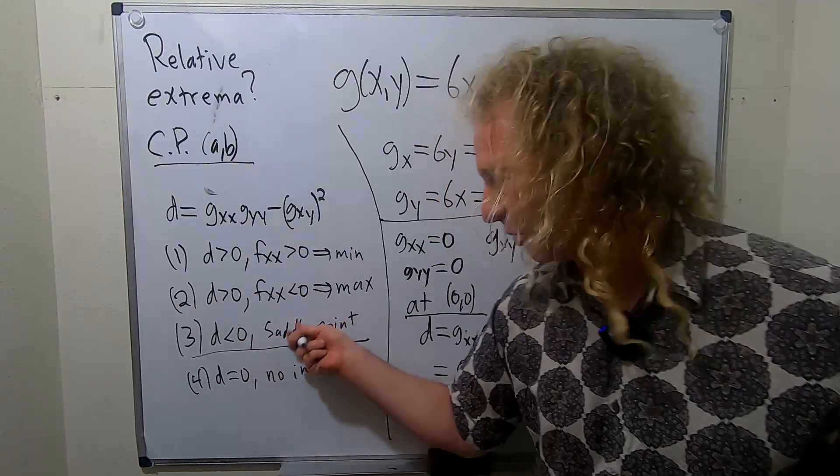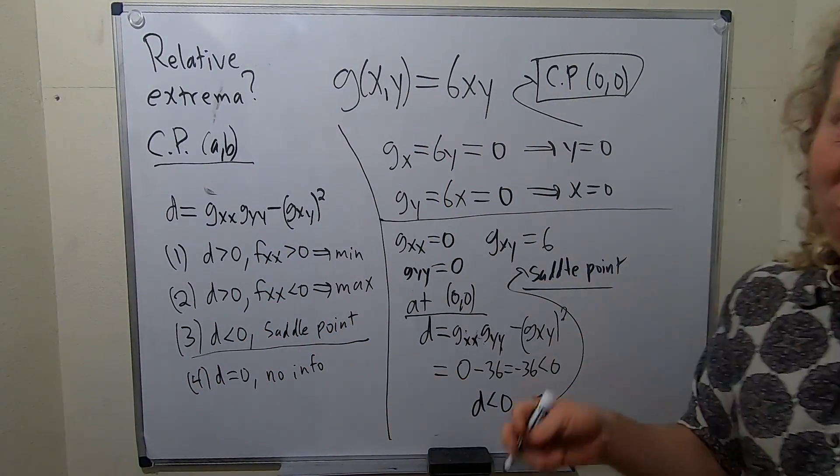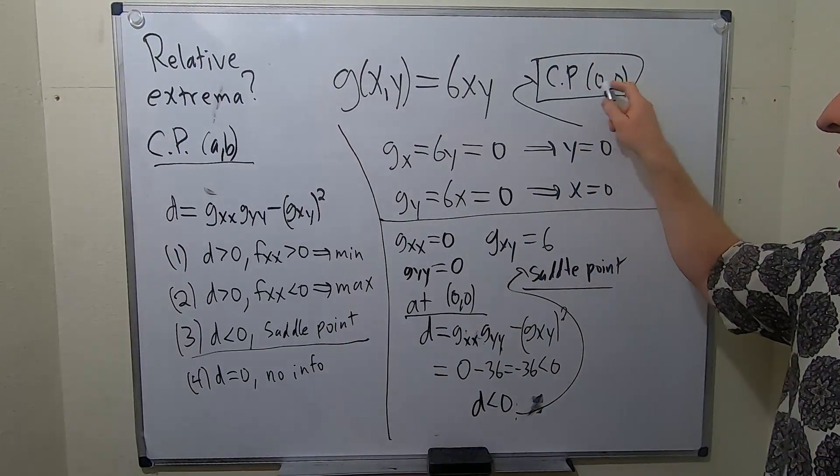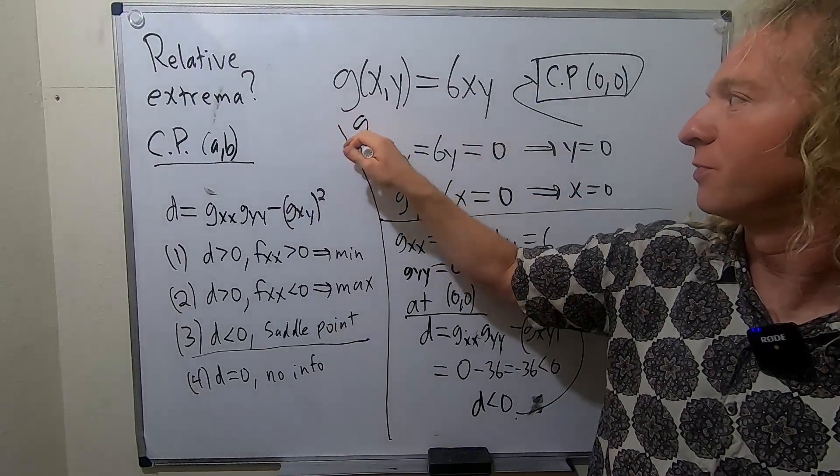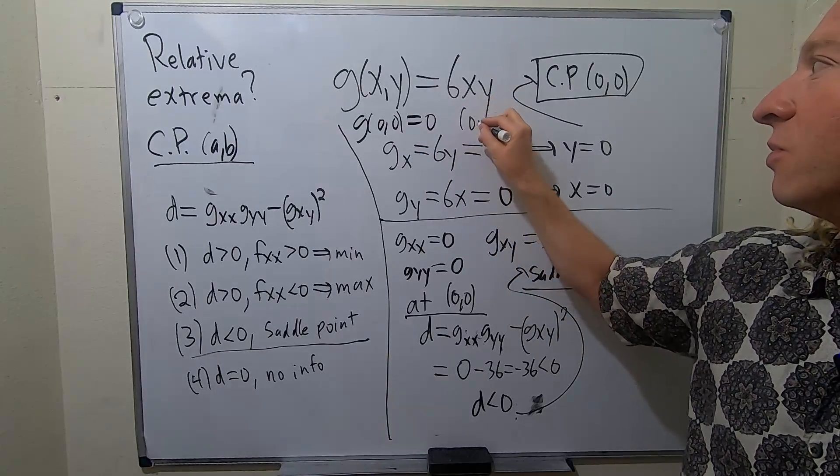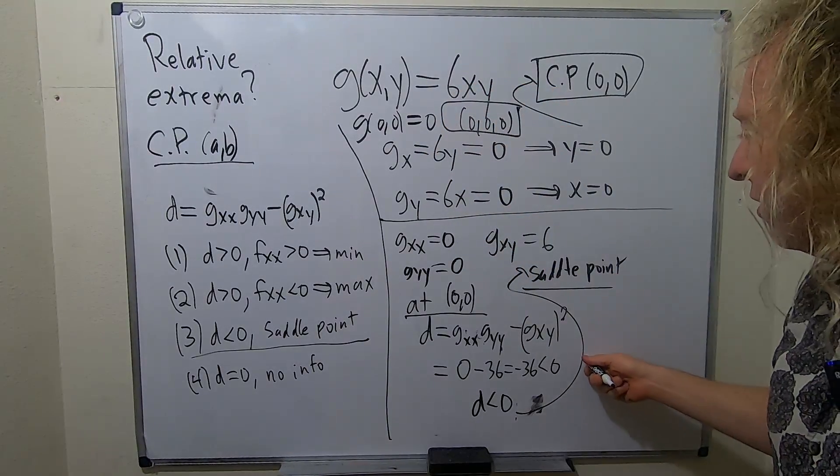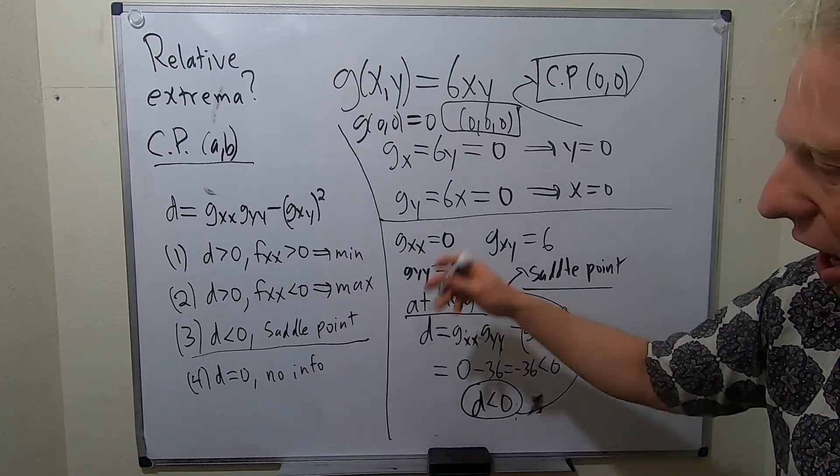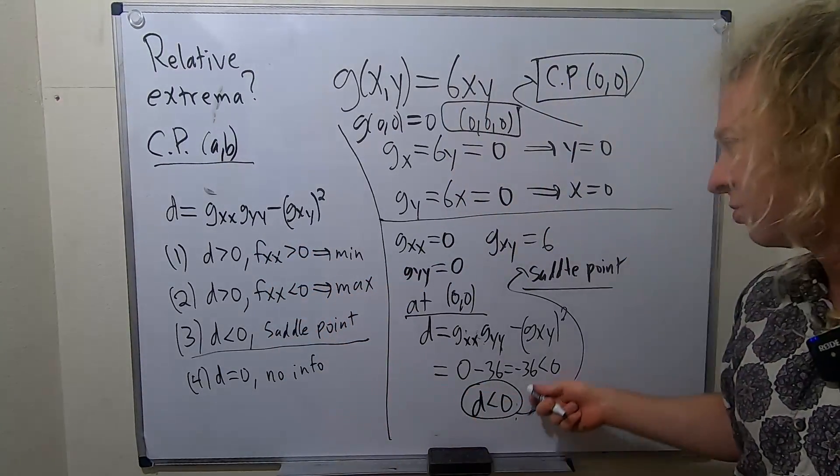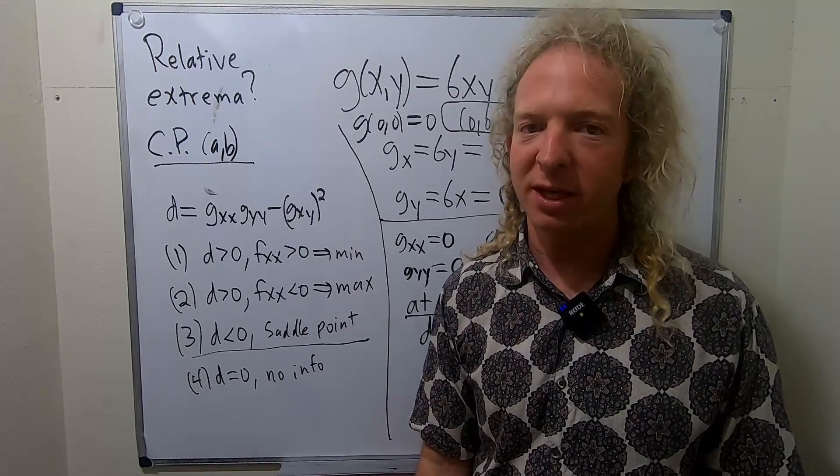D less than zero, we have a saddle point. So to finish, we actually have to find the point. Now what you do is you take your X and your Y and you plug them into the original. So G of zero, zero, you get zero. So your saddle point is zero, zero, zero. So the origin is a saddle point for this function. Whenever D is less than zero, automatically you don't need to look at these. You just go straight to the saddle point. I hope this video has been helpful. Take care.